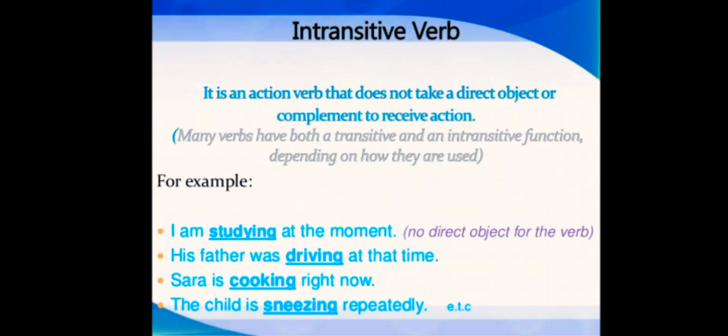Intransitive verb is the opposite of transitive verb. In transitive verb we needed an object to complete the sense; in intransitive verb we do not need an object. It is an action verb that does not take a direct object or complement to receive action. Many verbs have both a transitive and intransitive function depending on how they are used. Examples: I'm studying at the moment. His father was driving at the time. Sarah is cooking right now. The child is sneezing repeatedly. So object is not necessary. The last sentence, 'the child is sneezing repeatedly' - repeatedly is an adverb. We do not necessarily need an object or an adverb at the end to complete the sense.